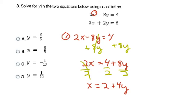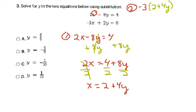My next step — step 2 — is to substitute this expression into my other equation. Anywhere in the second equation that I see an x, I replace it with what I just solved. So I have -3 times (2 + 4y) plus 2y = 6. I solve this for y, starting by distributing the -3: -3 × 2 = -6 and -3 × 4 = -12y. Then I still have + 2y = 6.